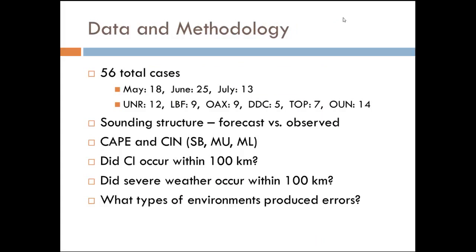In total, after eliminating all the cases that had convective parameterization problems or didn't have enough CAPE, we ended up with 56 total cases. 18 of those were in May, 25 were in June, and 13 were in July. It was pretty spread out over all the sites: 12 from Rapid City, 9 from North Platte, 9 from Omaha, 5 from Dodge, 7 from Topeka, and 14 from Norman.